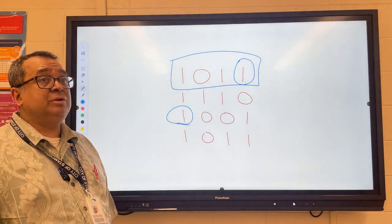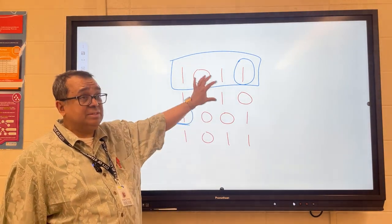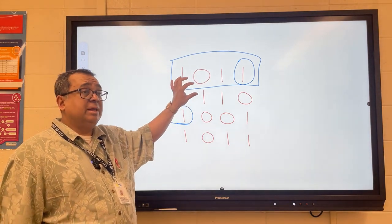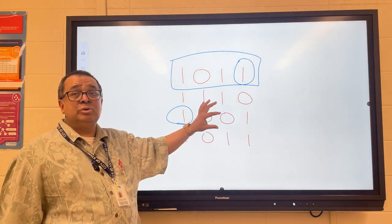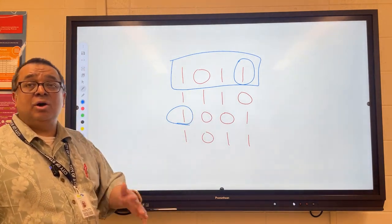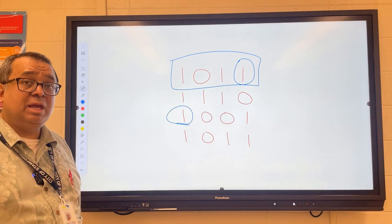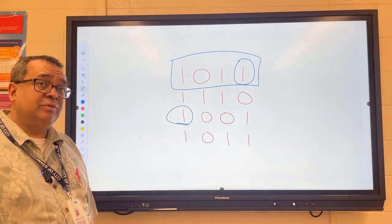Parity is still used for individual characters sometimes, but when we have entire large packets being transmitted we don't usually use parity. We use something else, either called a checksum or a CRC, and those are the two that I'm going to review with you today.